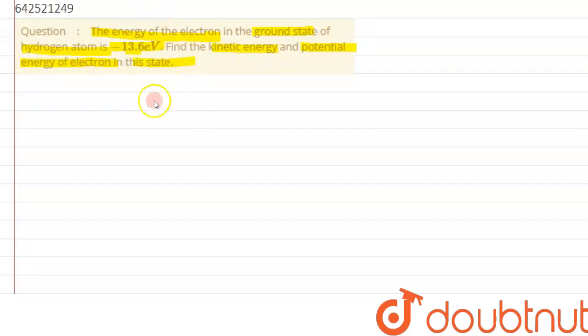About total energy, we can write that total energy is given by the expression minus 13.6 divided by n squared into z squared. This is the general equation of total energy associated with the electron in a particular orbit, or we can say nth orbit.